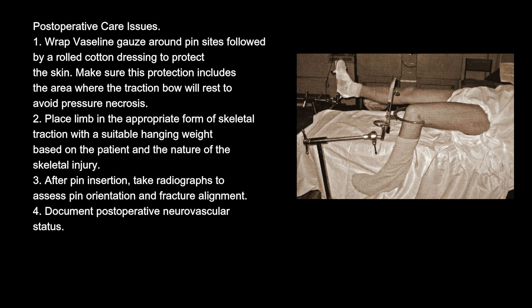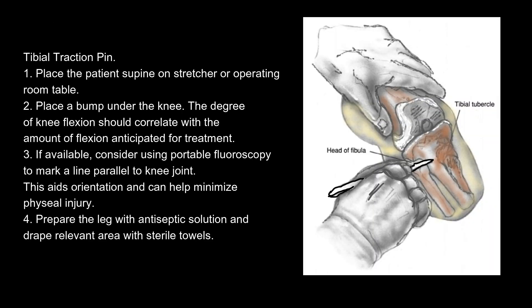Post-operative care: 1. Wrap Vaseline gauze around pin sites followed by a rolled cotton dressing to protect the skin, including the area where the traction bow will rest to avoid pressure necrosis. 2. Place the limb in the appropriate form of skeletal traction with a suitable hanging weight based on the patient and nature of the skeletal injury. 3. After pin insertion, take radiographs to assess pin orientation and fracture alignment. 4. Document postoperative neurovascular status.